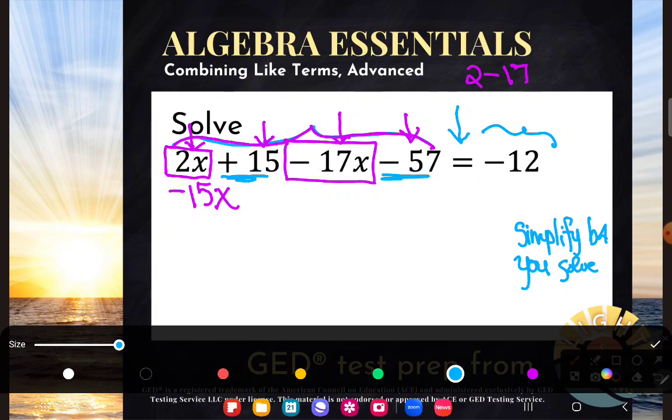Then I have plus 15 and minus 57, and again, you can do that in your calculator if you need to. So 15 minus 57 gives me negative 42. And now I've simplified the left-hand side. I replaced this and this with the negative 15x, and this and this with the negative 42. There's nothing left on the left. And so all of that will be equivalent to negative 12.